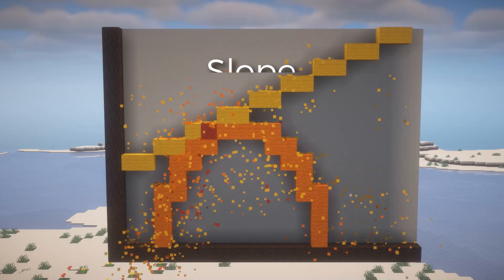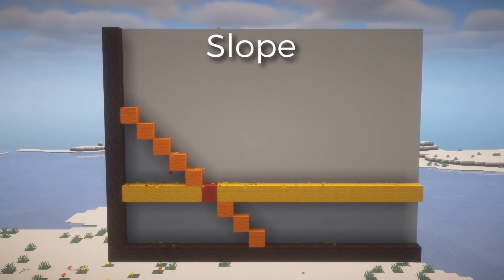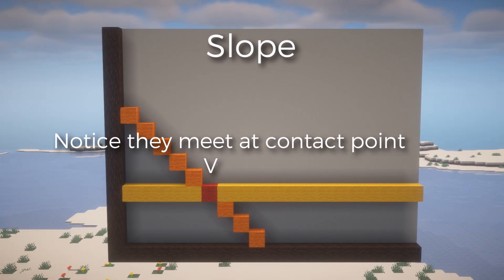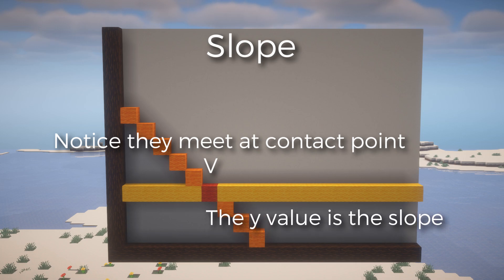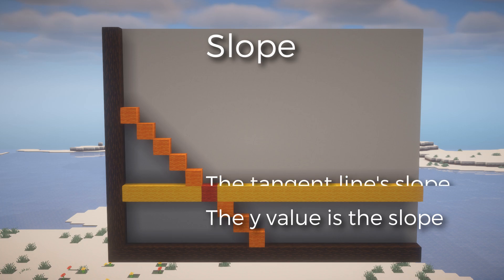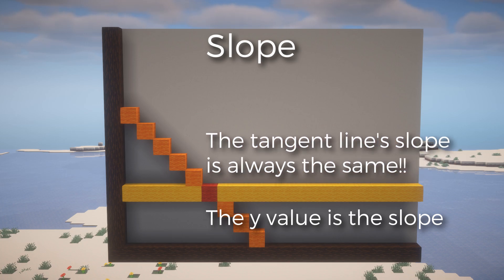So starting with the slope, if we take the derivative of the curve and then plug in the x value where they touch, we will be able to find the slope of not only the curve at that point, but the tangent line as well. Now remember, the slope of the tangent line at that point is actually the slope of the whole line since it's a straight line.